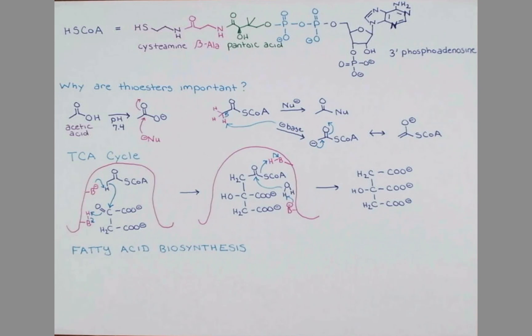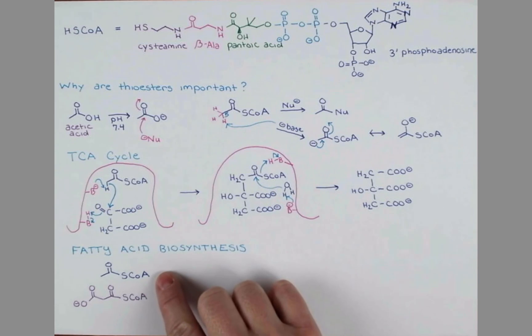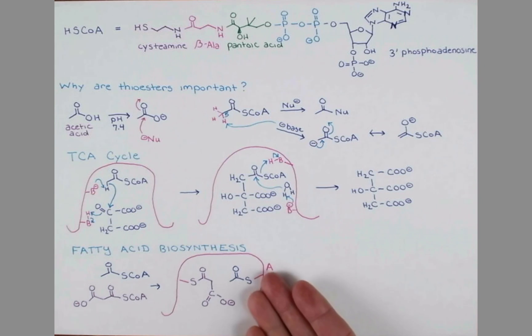Coenzyme A esters are super important in fatty acid biosynthesis as well. In fatty acid synthesis, acetyl coenzyme A and this molecule, malonyl coenzyme A, will be transferred to the acyl carrier protein. So here, the coenzyme A esters are allowing for a reaction called transesterification, and we're swapping for another sulfur group at this carbonyl when we attach it to the enzyme.